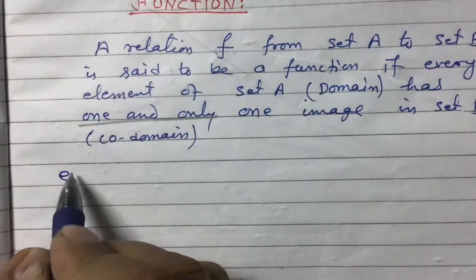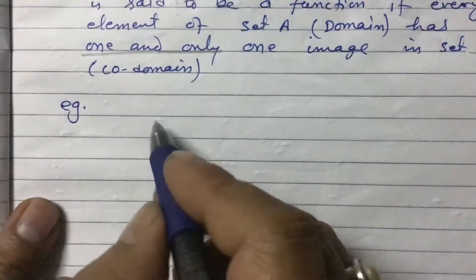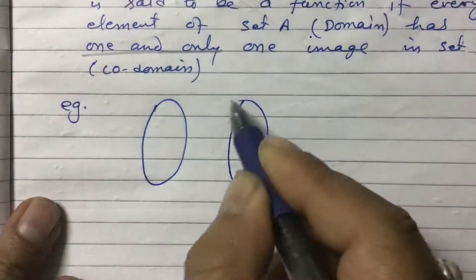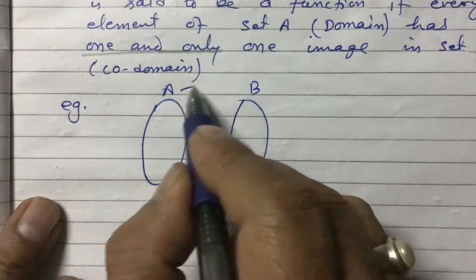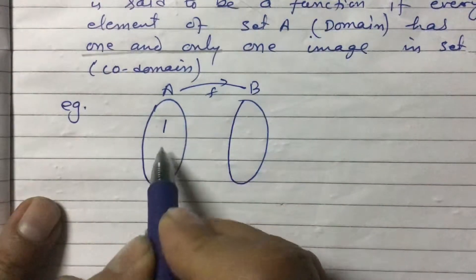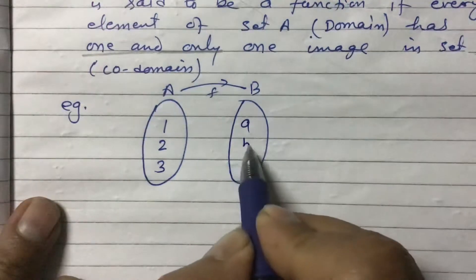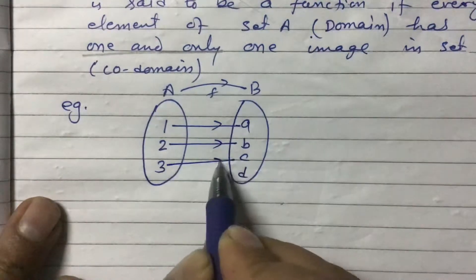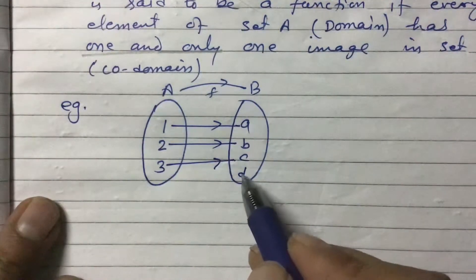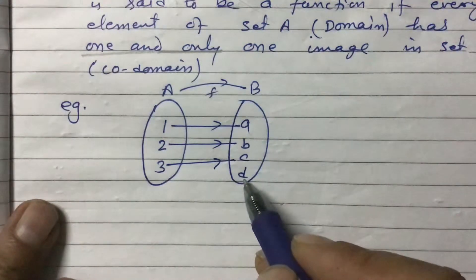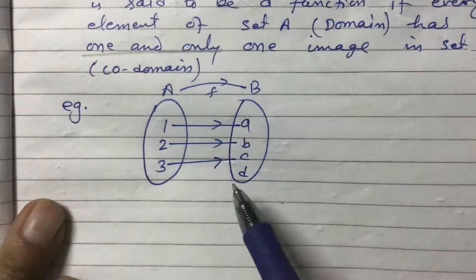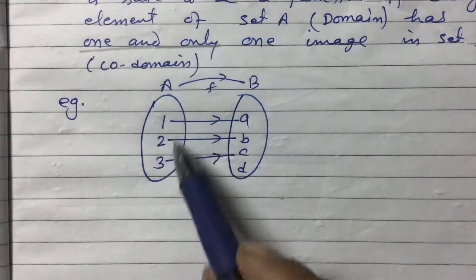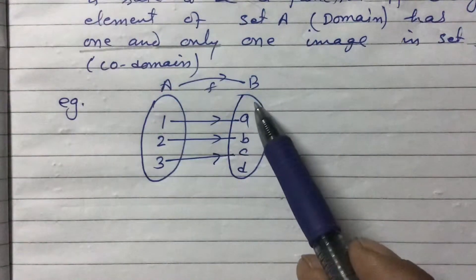Let me draw an arrow diagram to illustrate this. Suppose this is set A and this is set B, and f is a function from A to B. Set A contains 1, 2, 3 and set B contains a, b, c, d. Here 1 has one image, 2 has one image, and 3 has one image, so it is a function. The extra element d in the codomain makes no difference. The first set A is called the domain and the second set B is called the codomain.